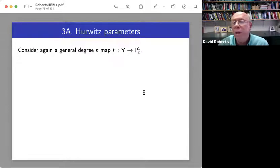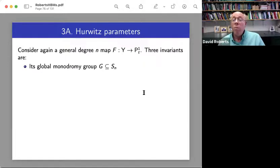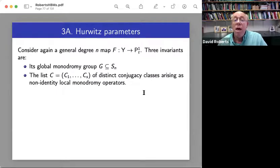So maybe many critical values, not just three. But we can again look at Belyi type invariants. It still makes sense to talk about the monodromy group, which I'm going to call G. It still makes sense to look at the conjugacy classes underlying ramification.